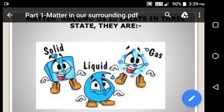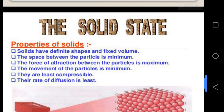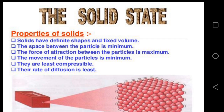First, we will try to understand the properties of solid state. Solids have definite shape and fixed volume, meaning they do not change their shape when they are put in different containers. If you put a thing in any box, it doesn't change itself. Solids have fixed volume.